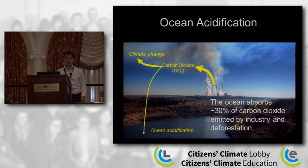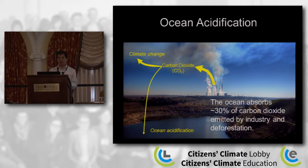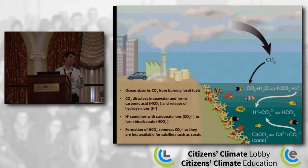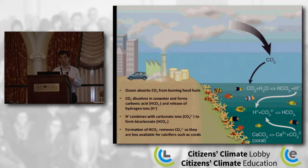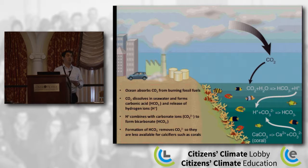Ocean acidification is a result of carbon dioxide pollution. About 70% goes into the atmosphere driving climate change, but 30% is absorbed by the ocean, caused by oil, gas, and coal industries, as well as deforestation. What happens when CO2 goes into the ocean is that it removes the building blocks calcifying organisms need to survive — to build their skeletons if they're corals, or their shells if they're clams, mussels, or oysters. Without carbonate ions, they spend more energy trying to find them, leaving less energy for reproduction, eating, and fighting off disease, so they tend to die off sooner.